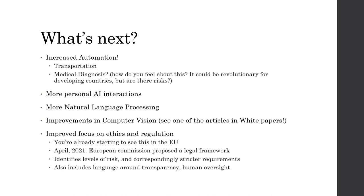AI systems could become better at emulating human interaction, leading to more personal AI interactions. We'll see more natural language processing and improvements in computer vision. There's an article posted in the white papers that talks about AI solving visual puzzles — it's amazing. We're at an inflection point. The last thing we need to be thinking about going forward is the ethics and regulation of AI. The European Commission proposed a legal framework in April 2021.